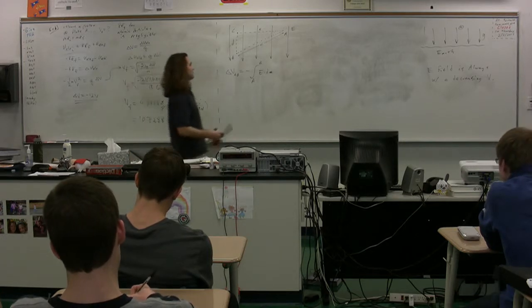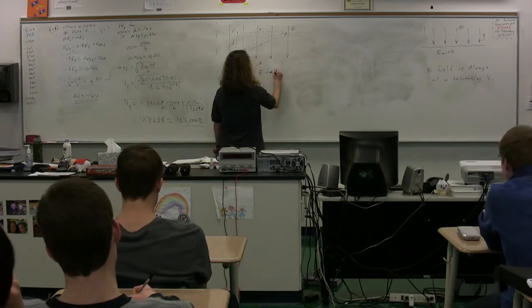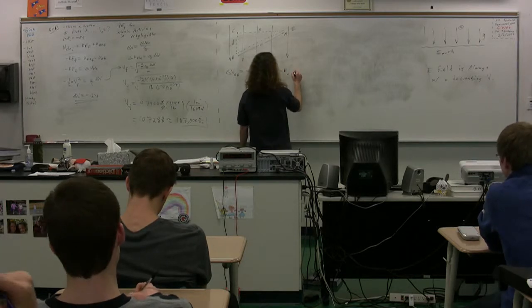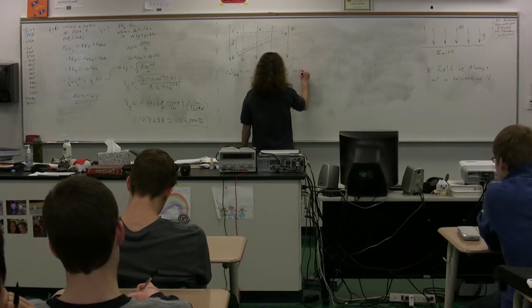Because we're in a constant electric field, the electric field can come out, and we get negative E times the integral of cosine of theta Ds.